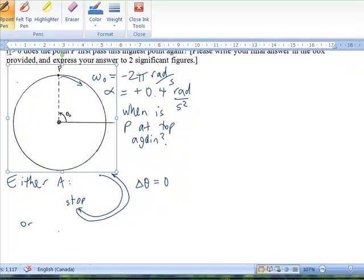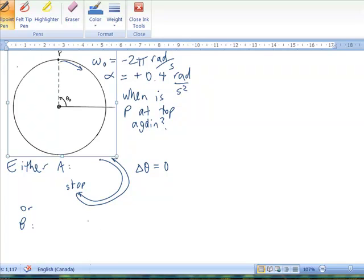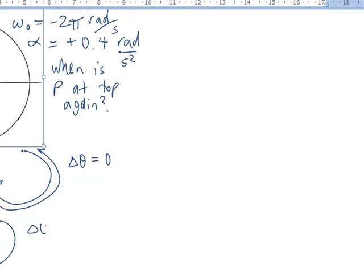Or, depending on how fast it's initially going compared to how fast it's slowing down, it might first go all the way around. As it's slowing down, so delta theta is equal to two pi.